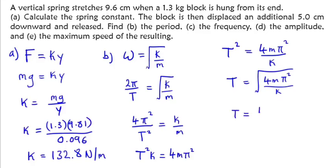Let's find the period. 4 times m, which is 1.3, times π², divided by the spring constant 132.8. All this is under one root. The period is 0.62 seconds.